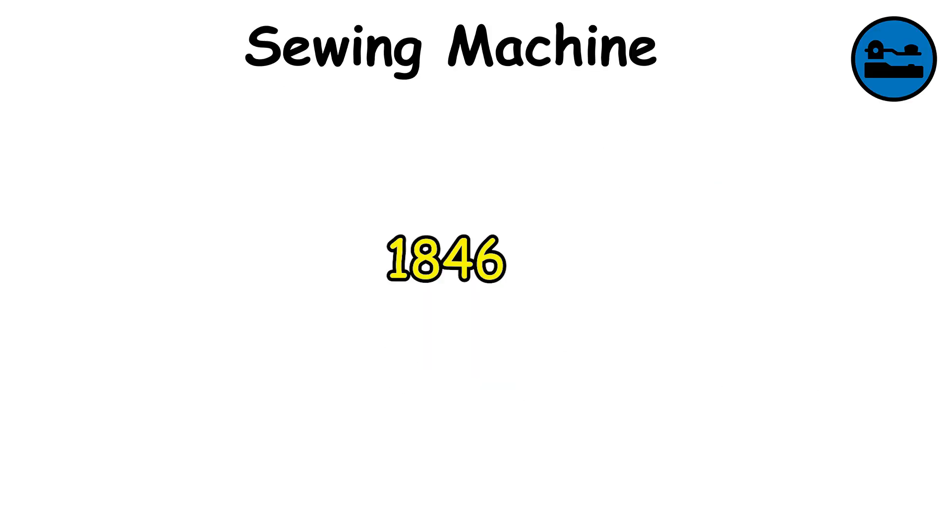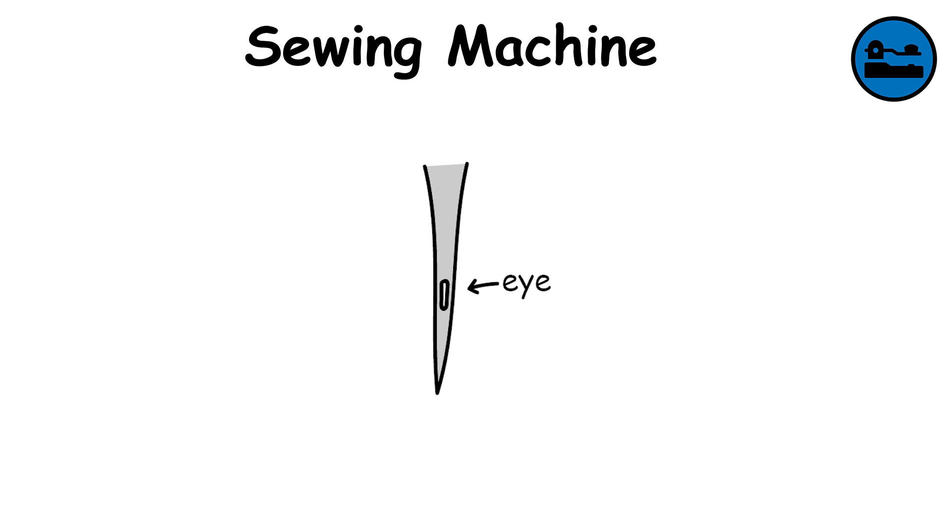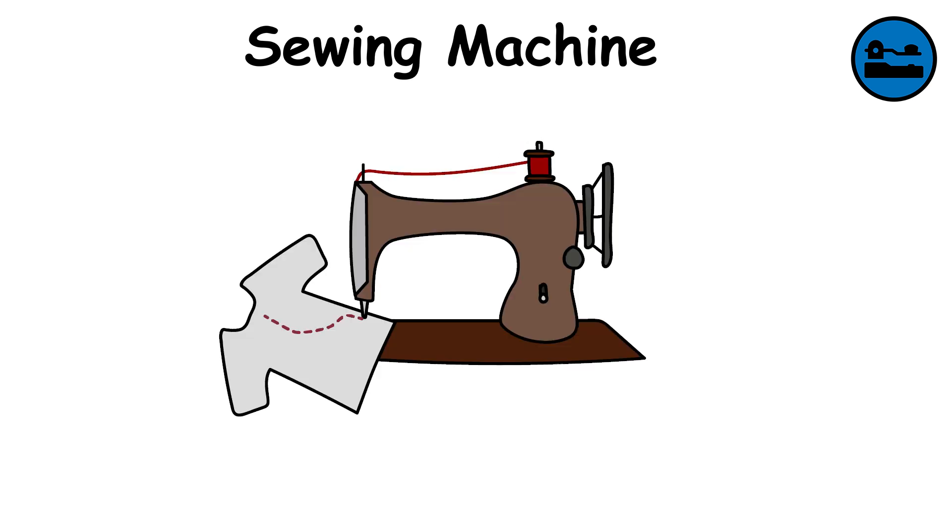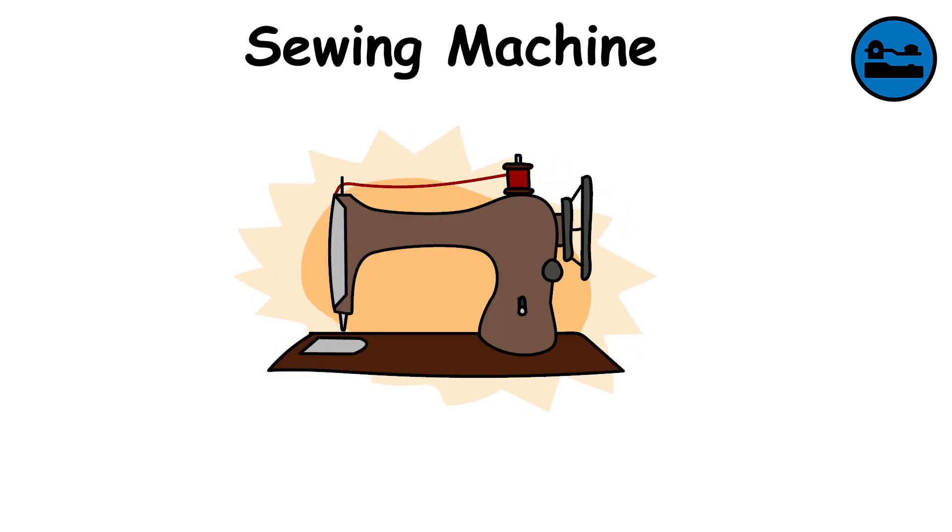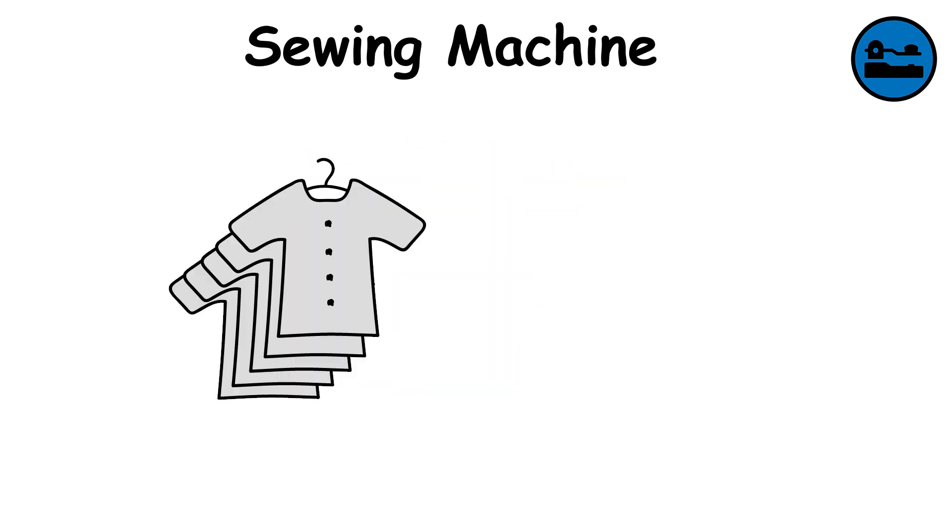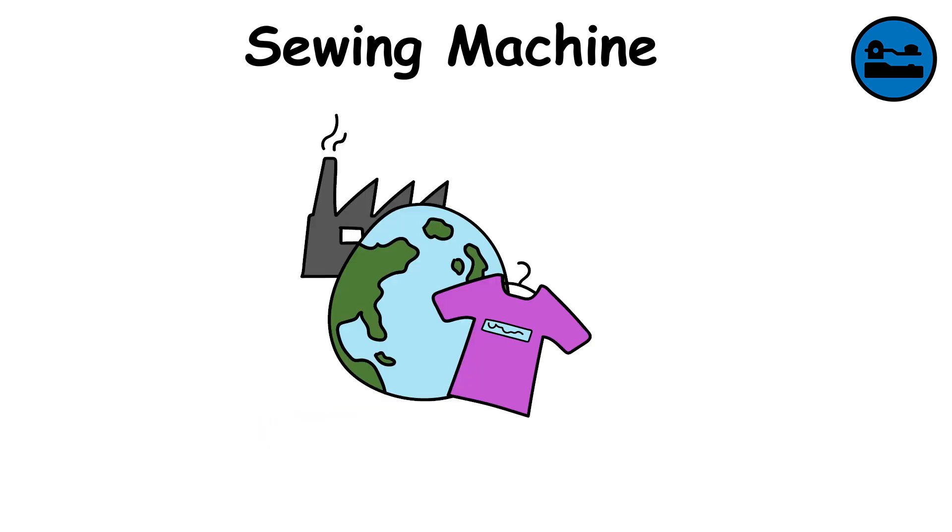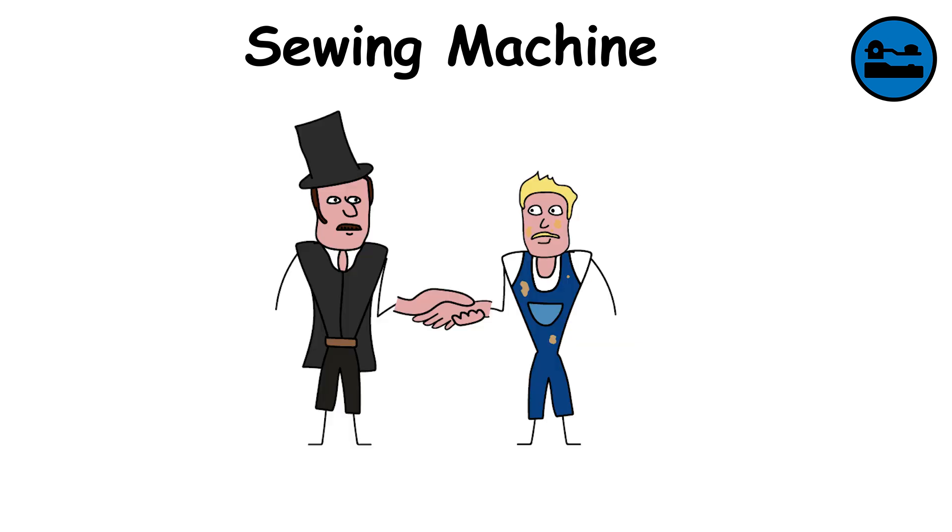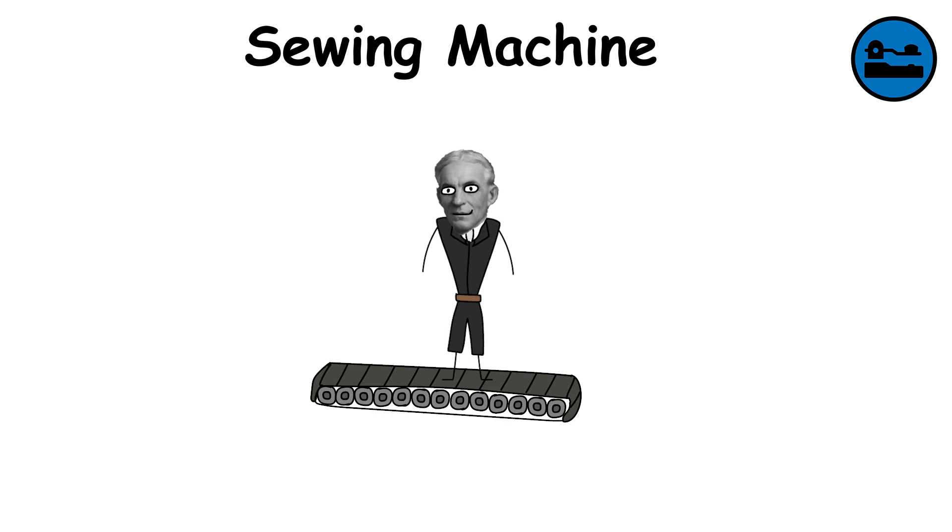Sewing Machine. In 1846, Elias Howe patented a design that used a needle with an eye near the point, allowing thread to loop and stitch fabric automatically. A few years later, Isaac Singer improved the design and made it practical for mass production and home use. The sewing machine drastically reduced the time needed to make clothing and helped launch the modern textile industry. It made fashion more accessible, boosted industrial employment, and marked one of the earliest steps toward automated manufacturing.